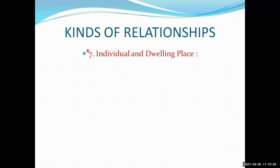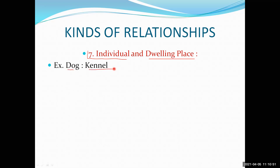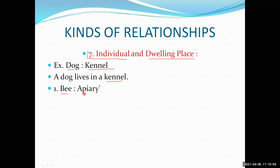That was one relationship. Now here is another one — individual and their dwelling place. Dwelling place means where animals usually live. Different animals live at different places. For dogs — domestic dogs are kept in a kennel. Bees are kept in an apiary, which is the place where honey bees are kept. Cattle are kept in a shed.